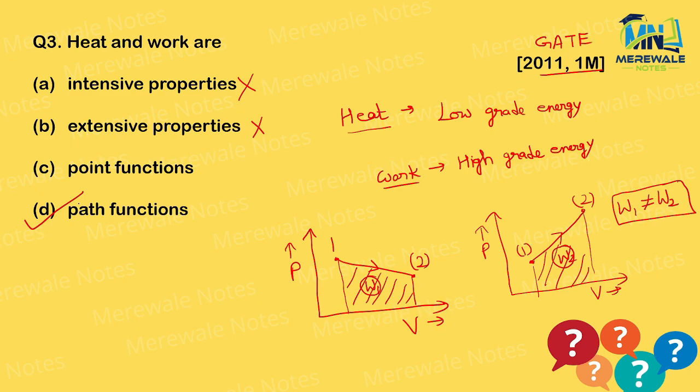Since both heat and work depend on the path, they are path functions. The statement that they are point functions is incorrect. Therefore, D option is correct.